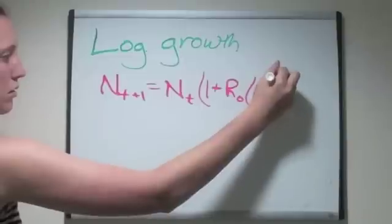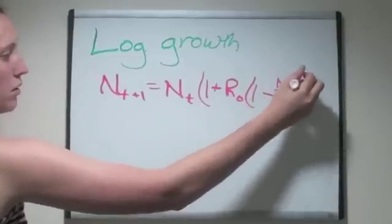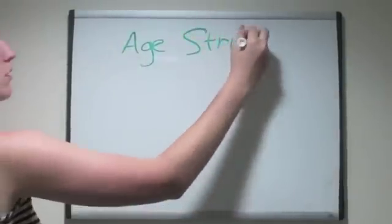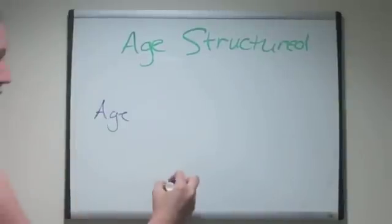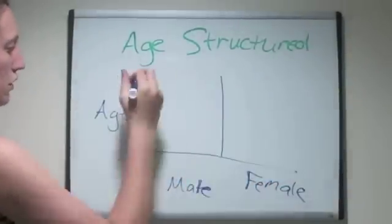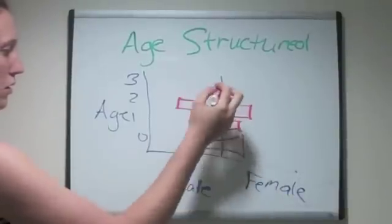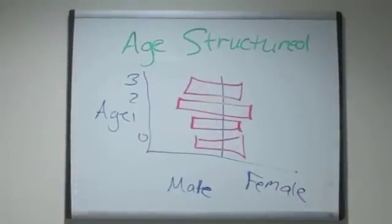In this equation, k is the population size at which growth is zero, and r sub zero is the maximum per capita growth rate. Another type of population model is age structure, in which individuals are partitioned into age classes. In this, it is assumed that fecundities and survival are related to age.